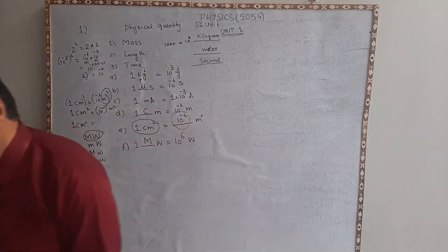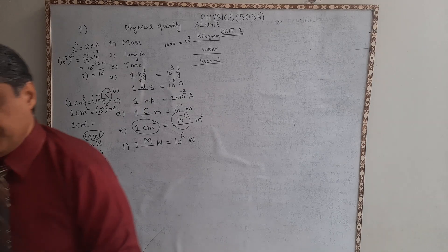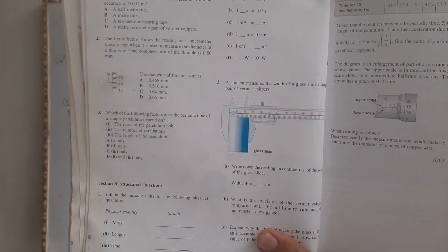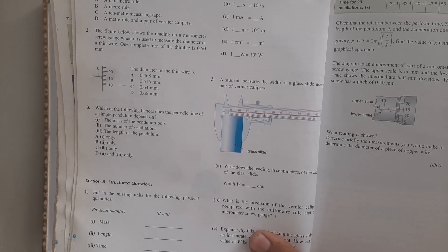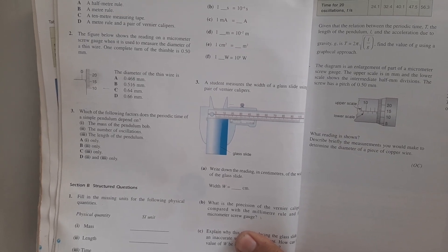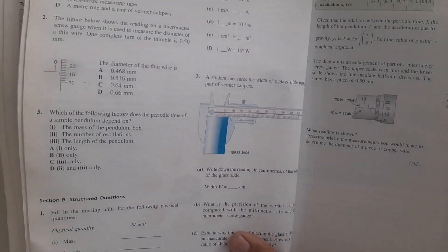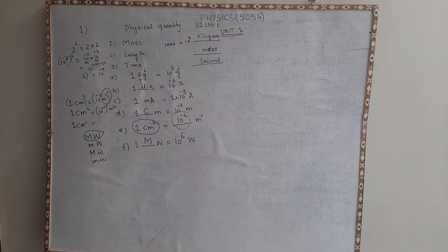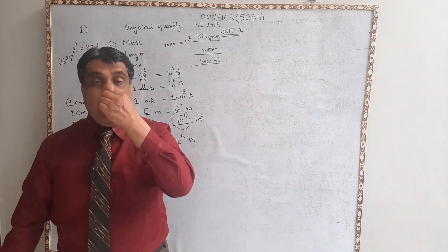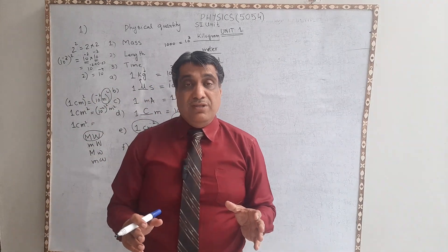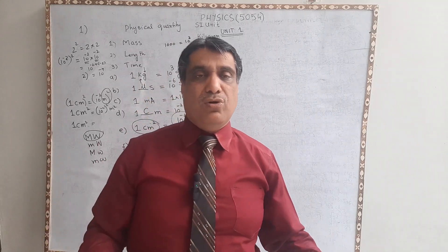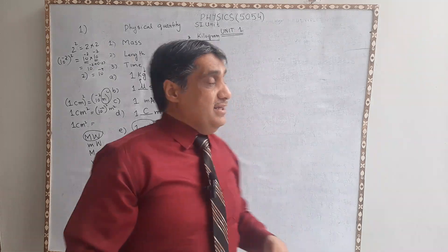Question number three gives you a figure of a Vernier caliper. You can look at it very closely — pause the video, observe it, then start the video again and we will talk about it. If you have observed after pausing, let us proceed. If you are not understanding it, you can go back and then come forward.